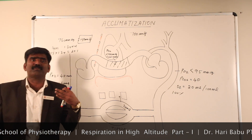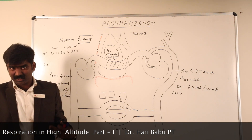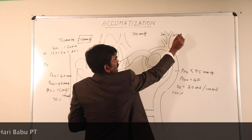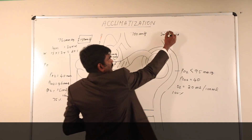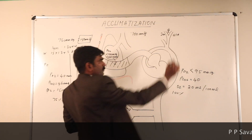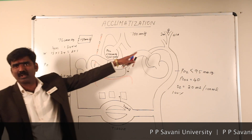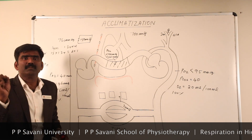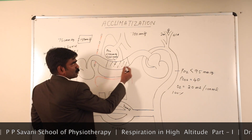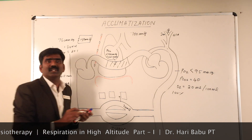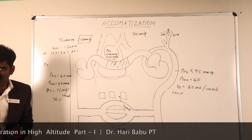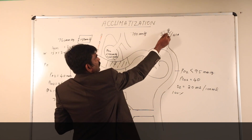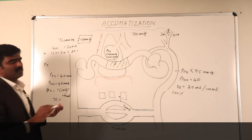If the partial pressure of oxygen falls below 60 mmHg, the peripheral chemoreceptors — the carotid bodies and aortic bodies located at the bifurcation of the carotid artery — detect this drop. These peripheral chemoreceptors sense the partial pressure of oxygen, and when it is less than 60 mmHg, the carotid body sends information to the central nervous system.